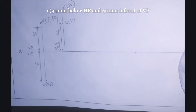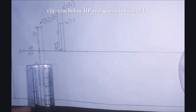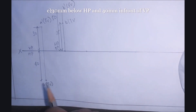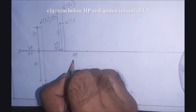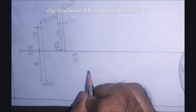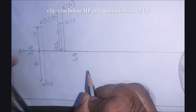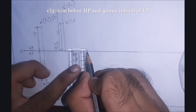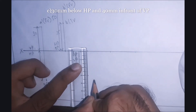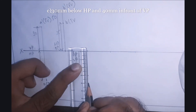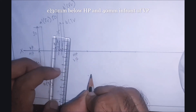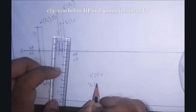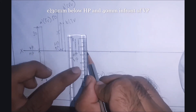Point C is 30 mm below HP and 40 mm in front of VP. Since the point is below HP and in front of VP, the point lies in the fourth quadrant. Both the HP and VP projections will lie below the XY line. Let's mark the point 30 mm below HP and 40 mm in front of VP — let this be C (top view) and C' (front view). Let's join this and draw the dimensions.